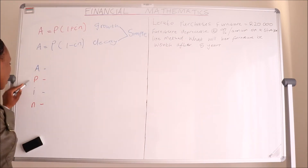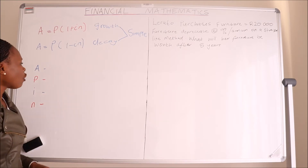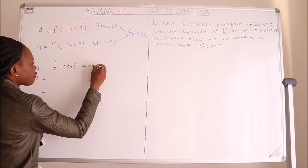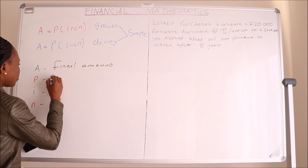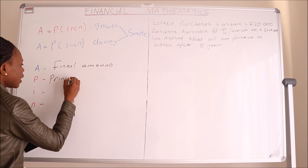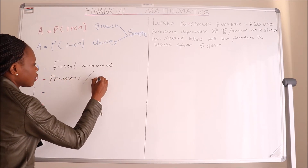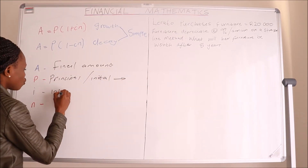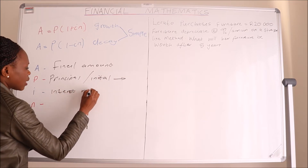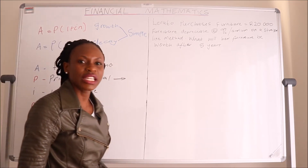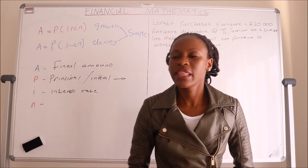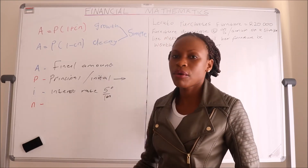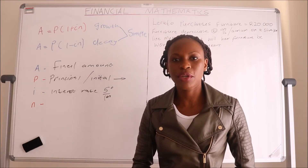In those two equations we have the parameters A, P, I, and N. A stands for the final amount. P is the principal amount, or the initial money that you have invested. I is the interest rate — if you are given an interest rate of, say, five percent, you have to divide that five percent by one hundred so that it is expressed as a decimal.